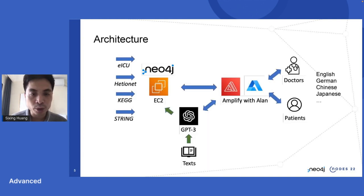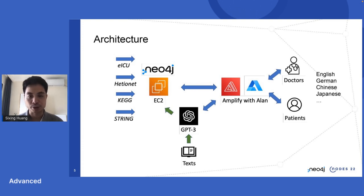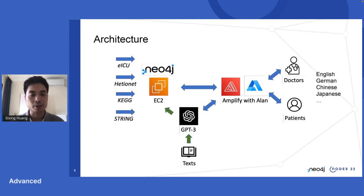Under the hood, Doctor AI looks like this — it begins at the right-hand side. Both doctors and patients can use this system. They can either type in the question or voice their questions using the Alan Studio API. Once we have the natural language question, we send it to GPT-3. GPT-3 will translate that English question back into a Cypher query, and that Cypher is used to query against the Neo4j backend.